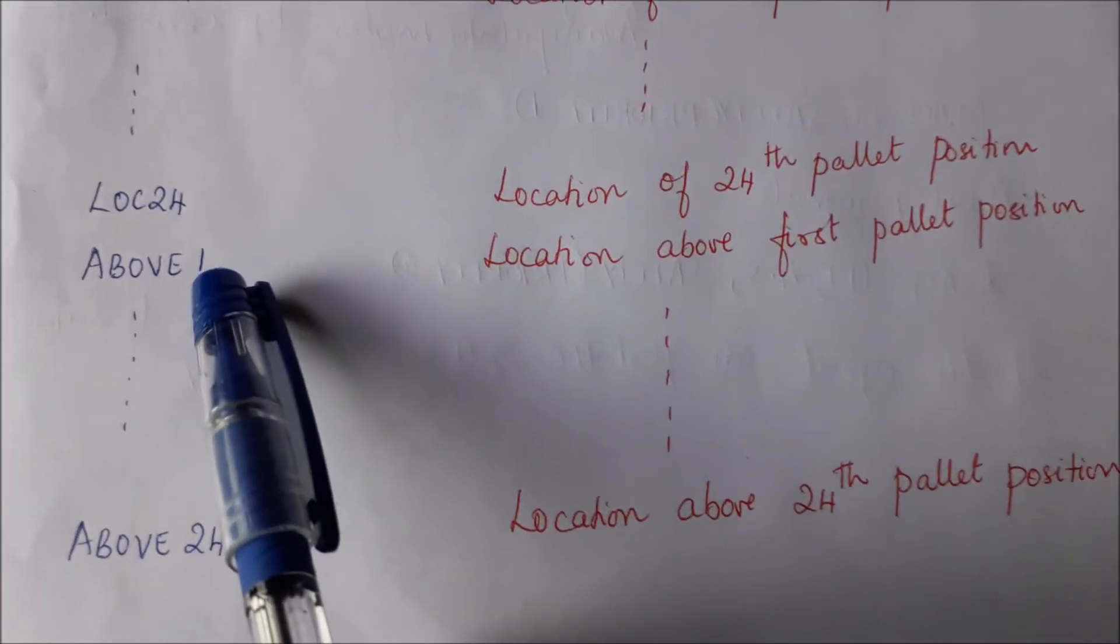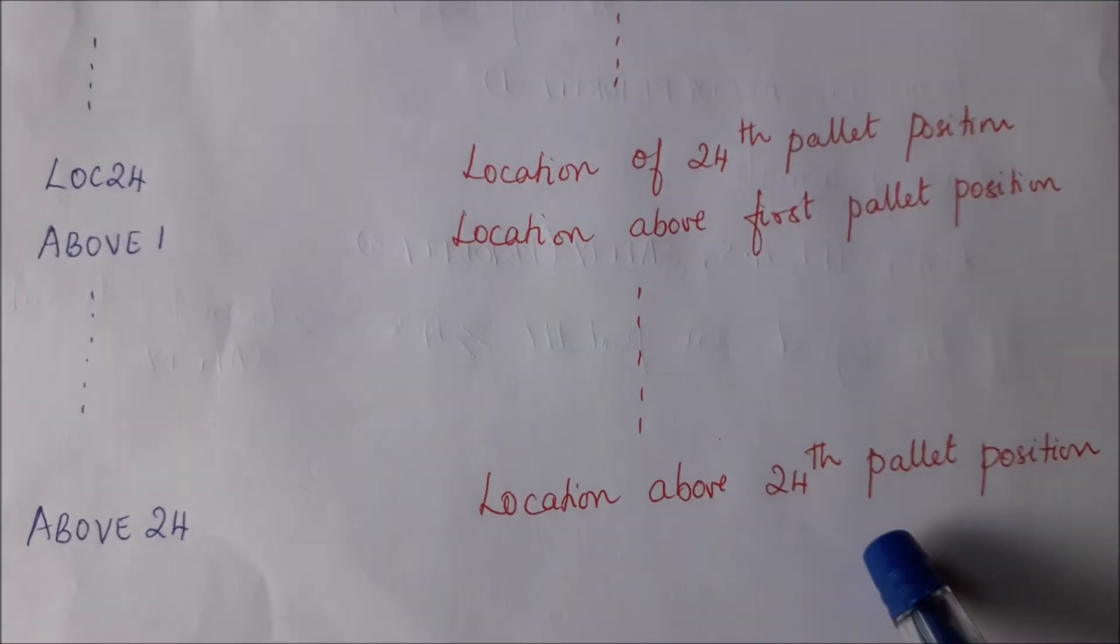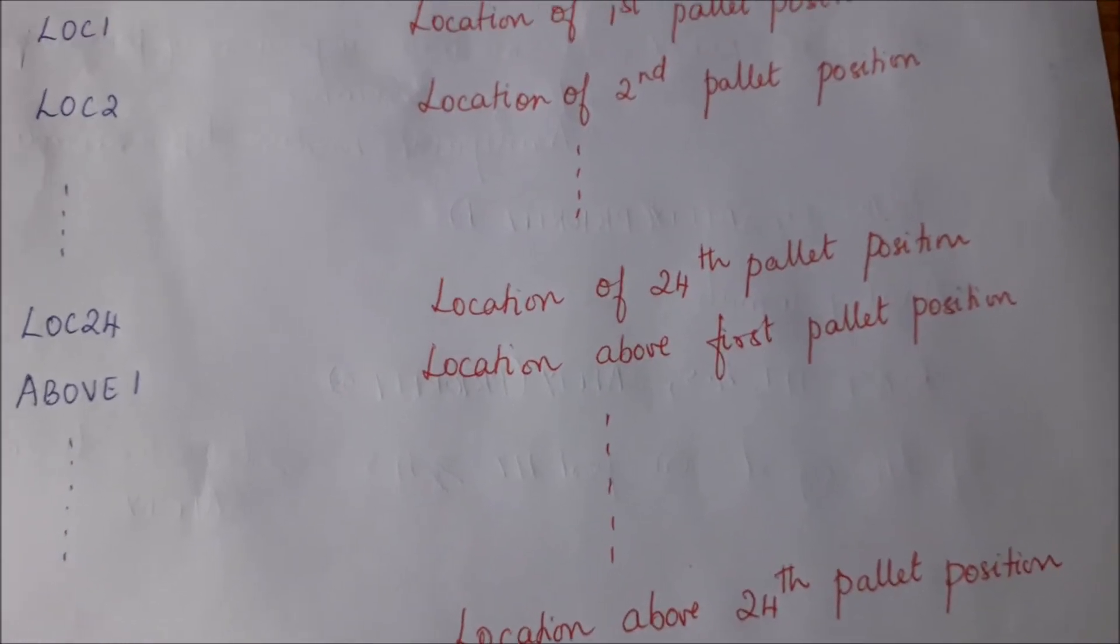So those locations above location 1, 2, 3 are called above 1. So above 1 is a location above the first pallet position. Like that above 24 is the location above the 24th pallet position.